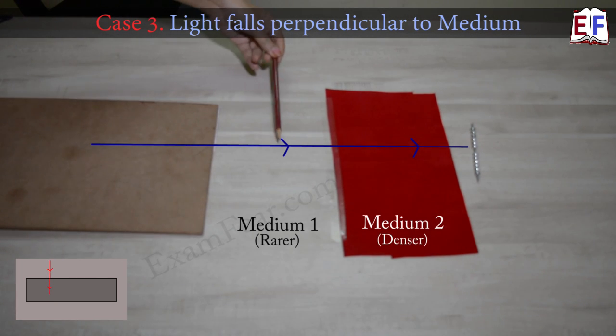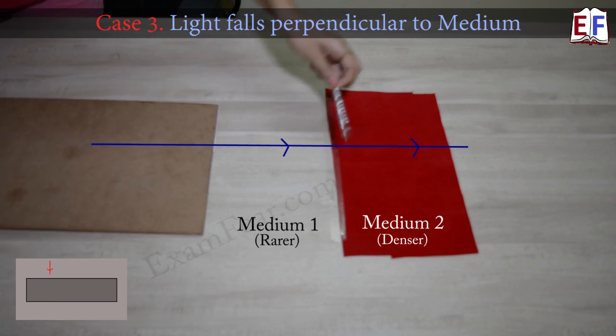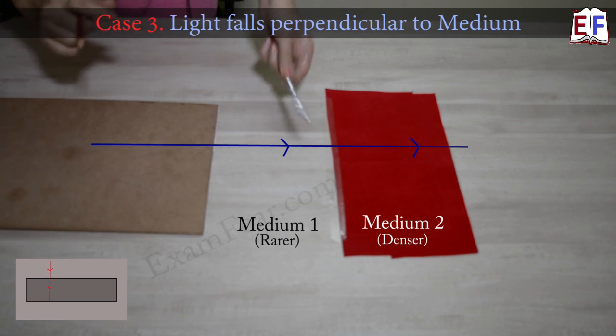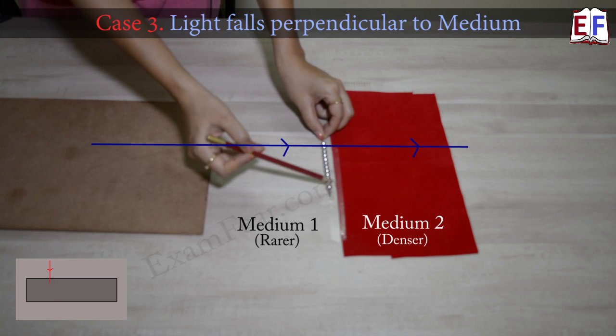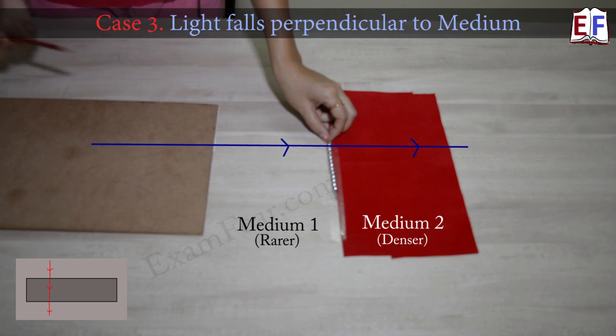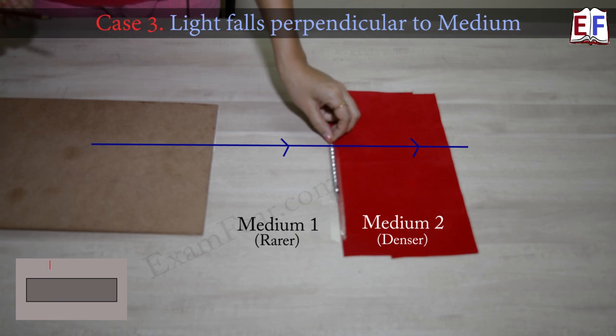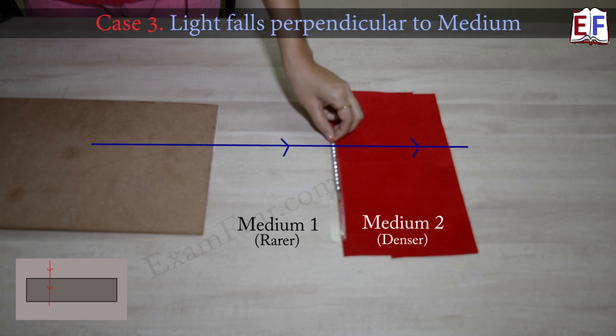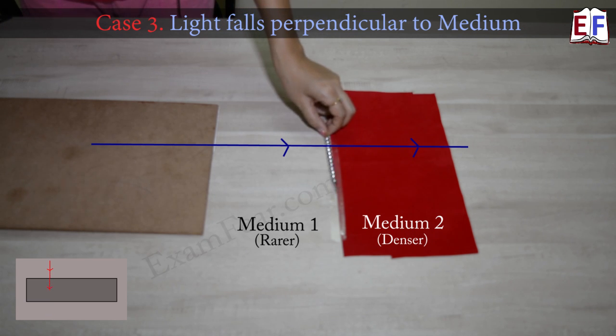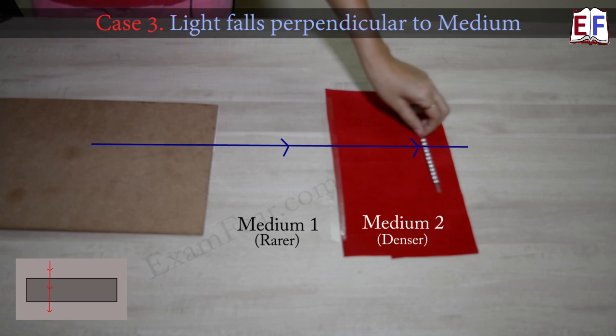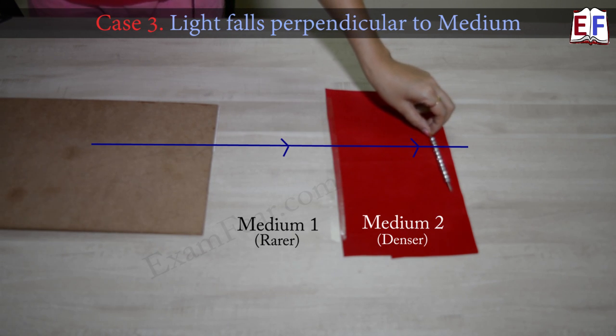When it moved from medium one to medium two, it just went straight. This happened because when you look at these beads which form this entire line, all of these entered the medium at the same time. The time when this reached the medium is the same as this bead reached the medium. So they all entered the new medium at the same time. Therefore, they all changed their speed at the same time. So throughout in this medium, they were in sync because they had the same speed. Throughout in this medium, they again had the same speed, so they were in sync.